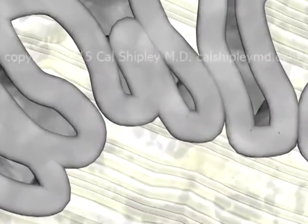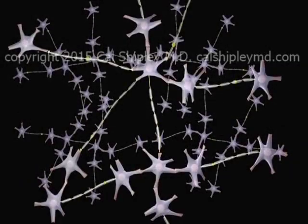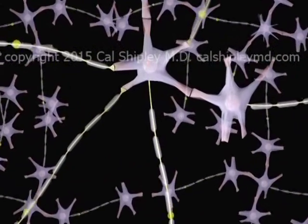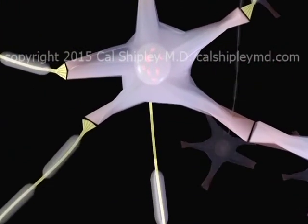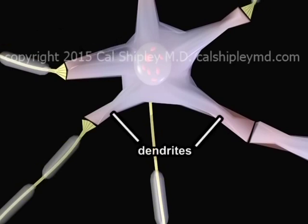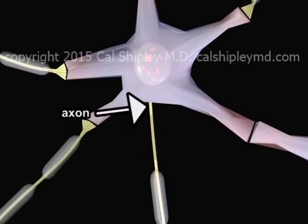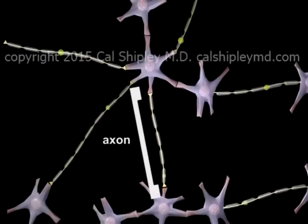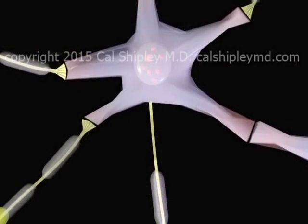Now let's take a look at the anatomy of the neurons. The human brain is a complex web of billions of interconnected cells known as neurons. Neurons are specialized cells which have a nucleus. Each neuron cell has multiple arm-like projections called dendrites. The neuron also gives rise to a long filamentous structure known as an axon. Neurons can have multiple dendrites, but usually have only one axon. Neurons communicate with one another by sending chemically generated electrical impulses through their dendrites and axons.